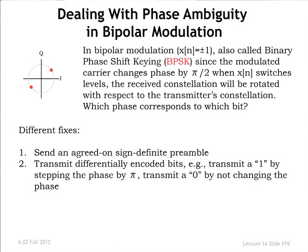If you're interested in polarity — whether the signal is positive or negative — you plot the point without taking the magnitude. With bipolar signaling, you use plus one to send a one and minus one to send a zero. The only problem is with uncertain phase and delay, you don't know which point corresponds to plus one and which to minus one. You could use a preamble with an agreed-upon sign, or differential coding — where stepping the phase by pi signals a one, and no phase change signals a zero. So even with the ambiguity, changing how you code at the sending end can compensate.